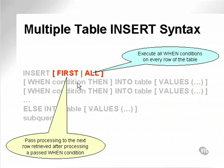The all option will actually execute all when conditions for every row passed through the insert statement. In other words, if a single row that is being inserted passes two when conditions, it can actually be inserted into two tables, two different tables, because it's passed through two when conditions.